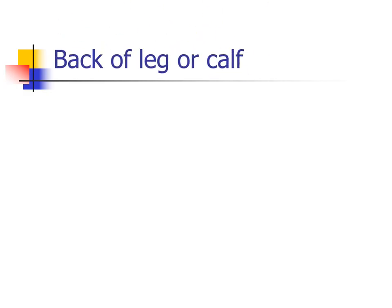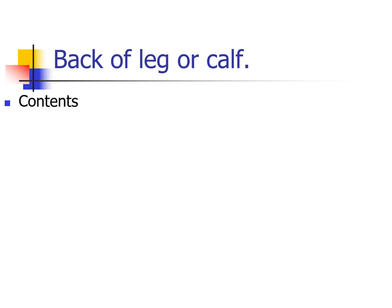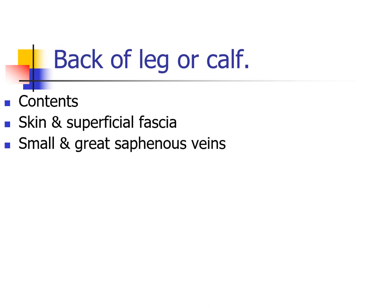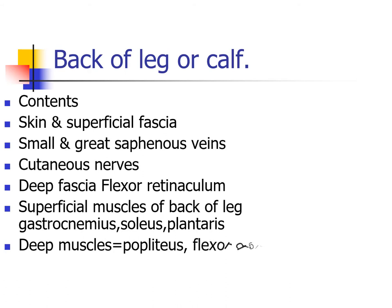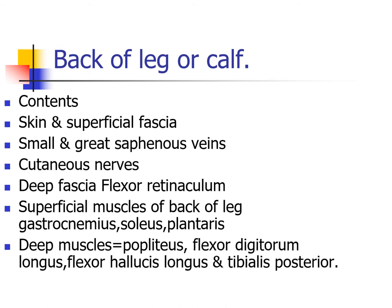Good morning. Today's topic is the back of leg or calf. The back of leg and calf contains the superficial fascia, small and great saphenous vein, cutaneous nerves, deep fascia, flexor retinaculum. Superficial muscles of the back of leg include gastrocnemius, soleus, and plantaris. Deep muscles are popliteus, flexor digitorum longus, flexor hallucis longus, and tibialis posterior. These are the contents of the back of calf muscles.